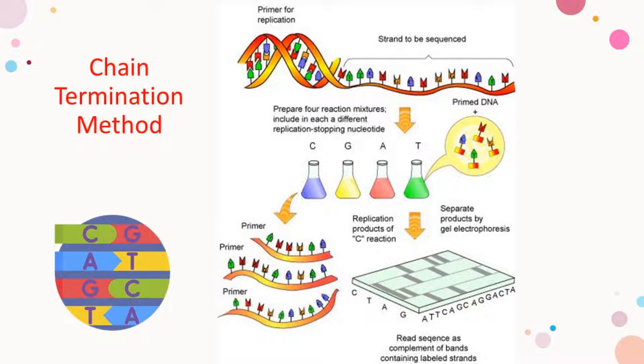The last step involves reading the gel to determine the sequence of the input DNA. In automated Sanger sequencing, a computer reads each band of the capillary gel in order, using fluorescence to call the identity of each terminal DDNTP. A laser excites the fluorescent tags in each band, and a computer detects the resulting light emitted.